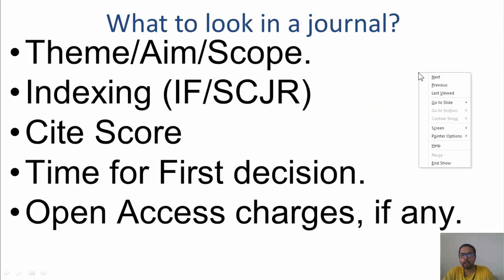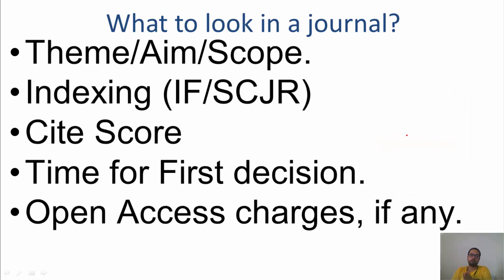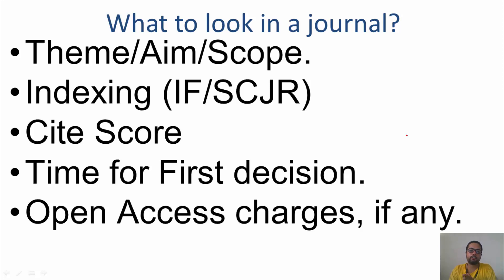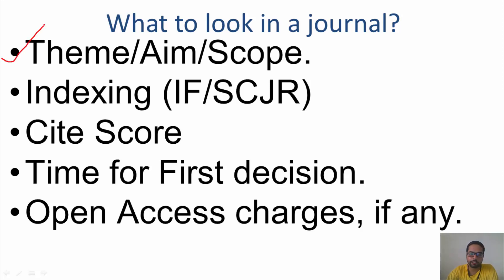When selecting a journal, the first thing to look for is the theme, aim, and scope. Even if you select a journal with a good impact factor and good indexing, if the theme, aim, or scope of your article does not match the journal's, your article is bound to get rejected no matter what you do. Theme, aim, and scope is the very first thing you need to check.